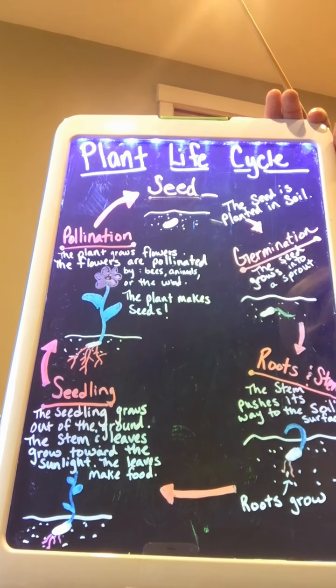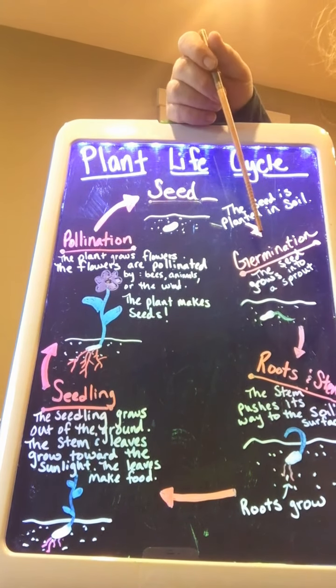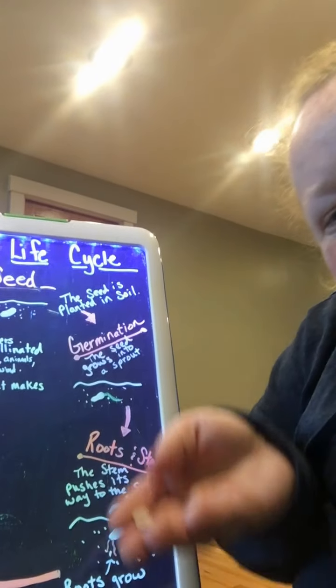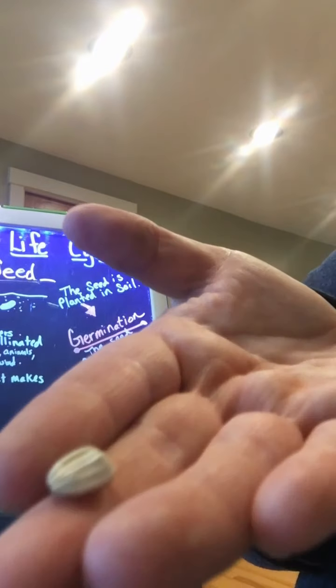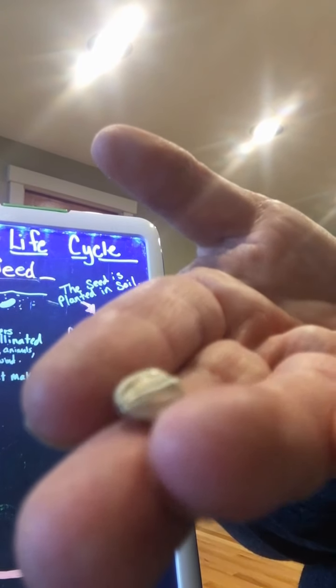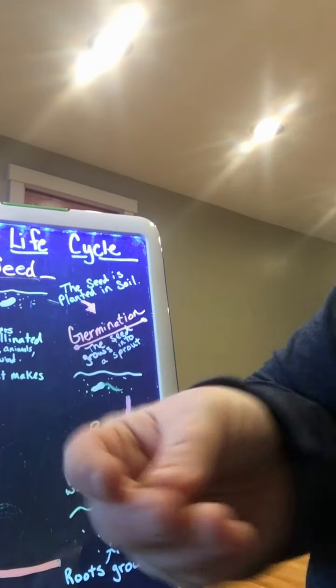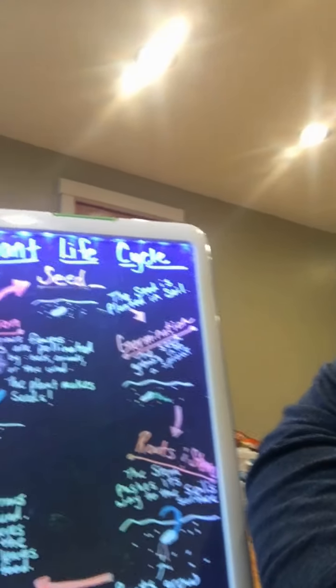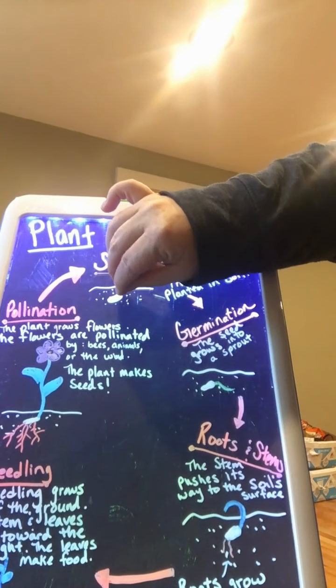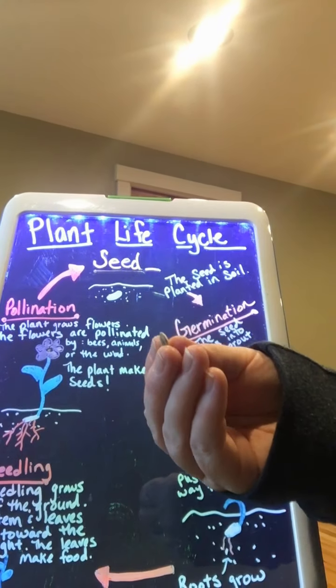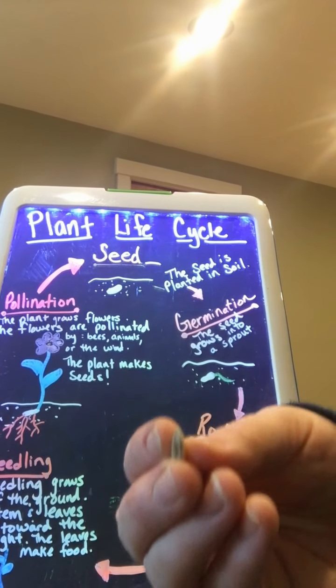Let's look and see what these parts of the plant life cycle look like in real life. The first part we're going to look at is very small — it is the seed. This is the seed of a sunflower plant, which most of you are probably familiar with. This is the part that goes in the ground and waits for water and a little bit of warmth. That is the first part of the life cycle of a plant, which is the seed.